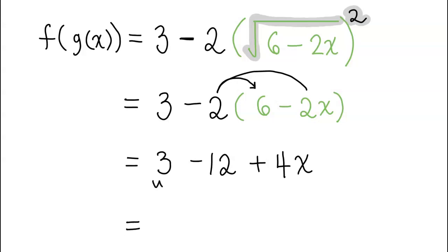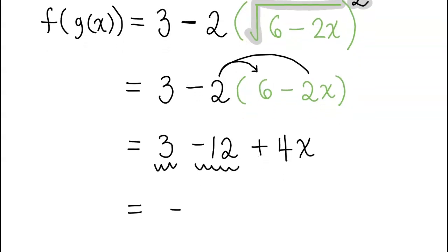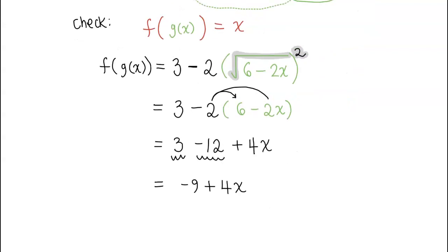Now let's simplify this. Combine the like terms of 3 and negative 12. 3 minus 12 is negative 9, so you have negative 9 plus 4x. Now is this what we wanted to see? Oh no, we did not want to see that. We wanted to see just a simple x coming out. This is not x.